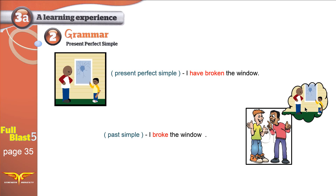It didn't happen recently and it's no longer important — it's a story from the past. So we use Present Perfect Simple when we talk about an action that happened in the recent past, that means not a long time ago, like this boy who says 'I have broken the window.'